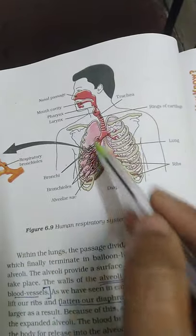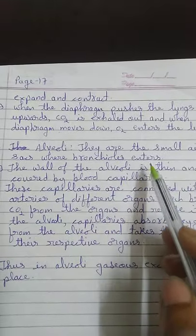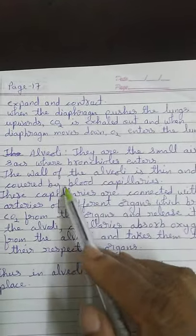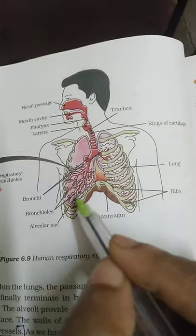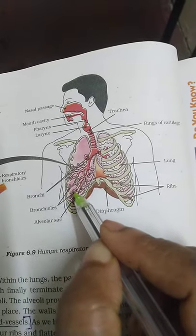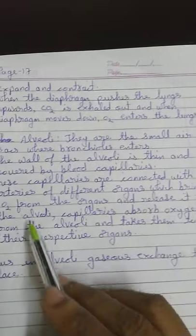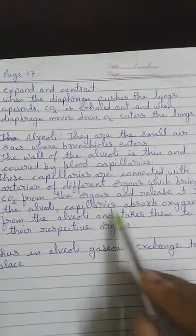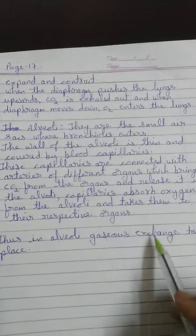The alveoli are small sacs where the bronchioles end. The walls of the alveoli are thin and covered by blood capillaries. Capillaries coming from all the organs carry carbon dioxide to the alveoli and release it there, while absorbing oxygen from the alveoli and transporting it to their respective organs. This is how gaseous exchange takes place in the alveoli.